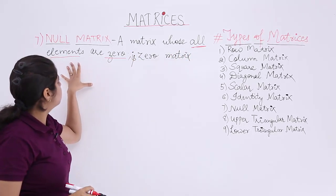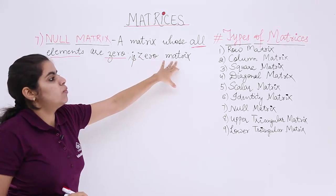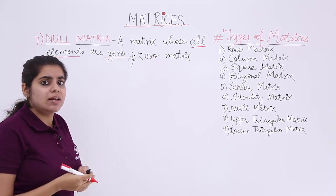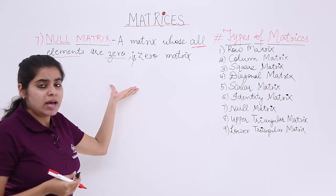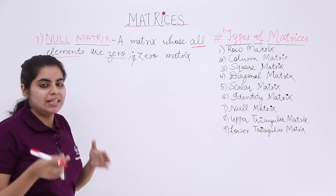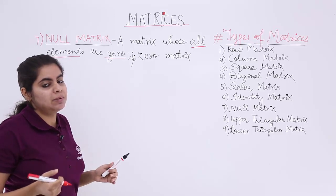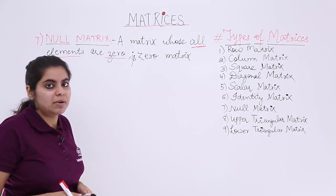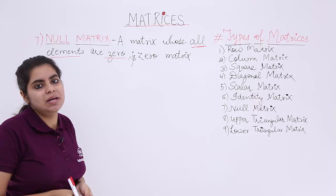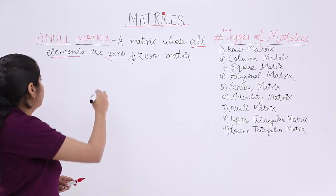A matrix whose elements are zero is a zero matrix. Now, did I say square matrix whose all elements are zero? No. That means this null matrix can be a square matrix also and can be a non-square matrix also. Let's see some examples and you will understand properly.